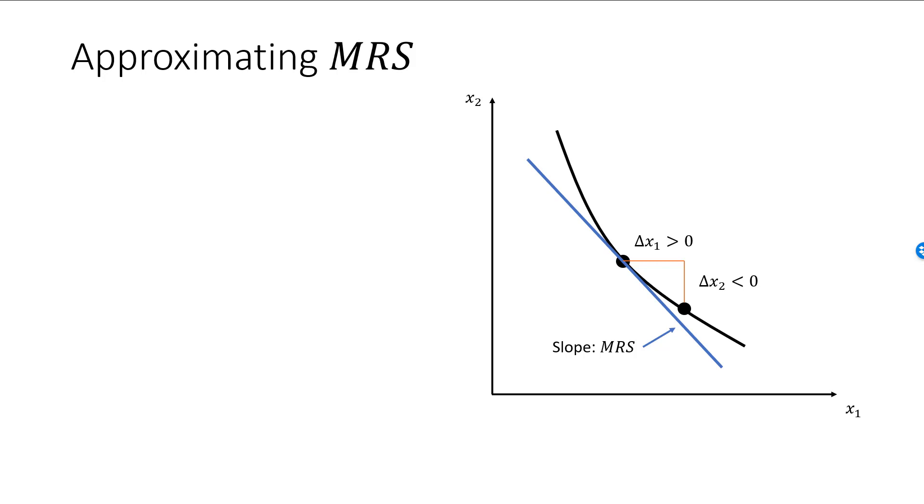Let's draw a nice red straight line through these two bundles. So, what is the slope of this red line? Well, we have the answer from BC Calculus. The slope of a straight line is always equal to the change in the variable on the y-axis divided by the change in the variable on the x-axis, or delta x2 divided by delta x1.